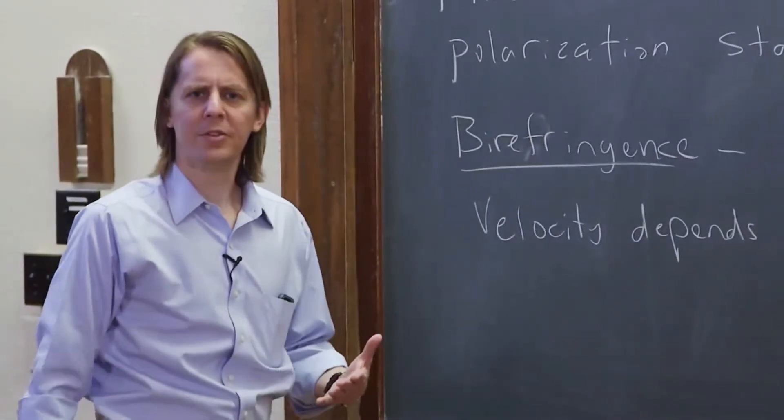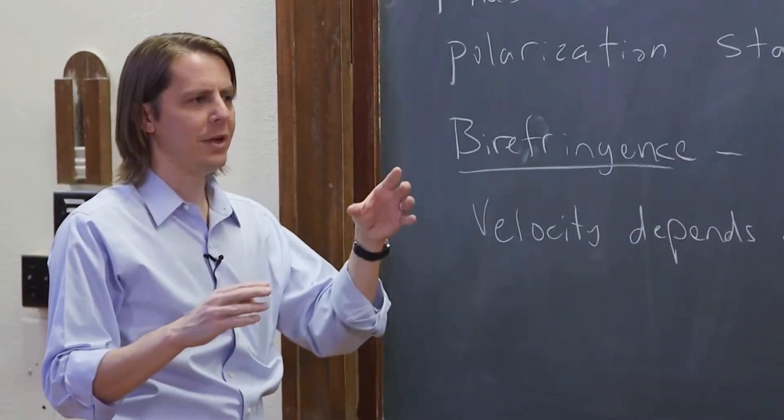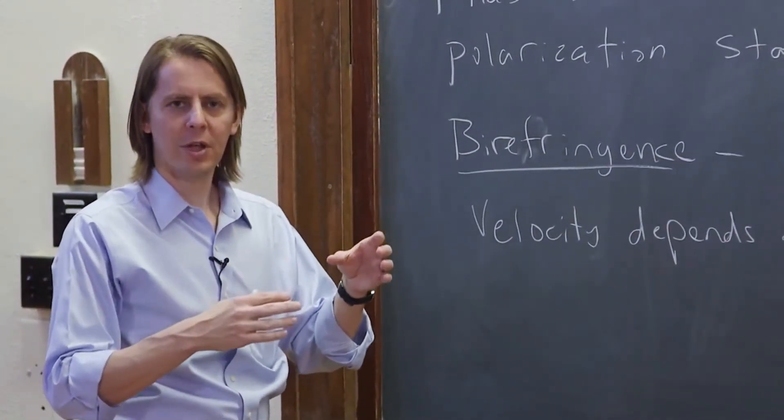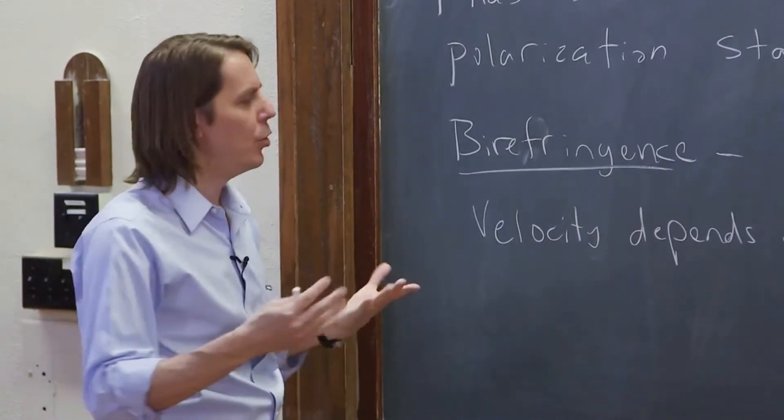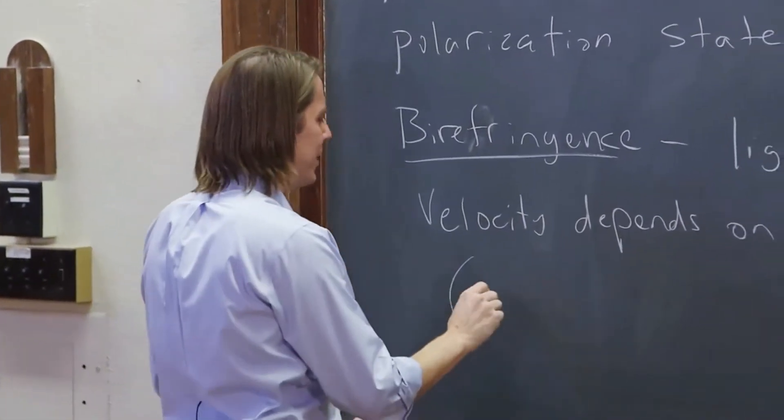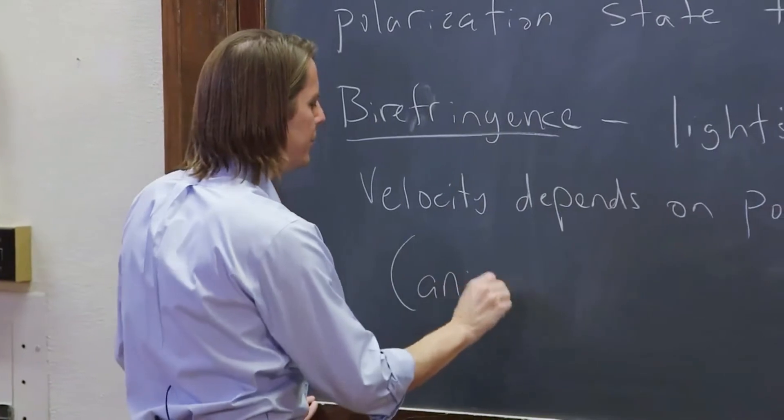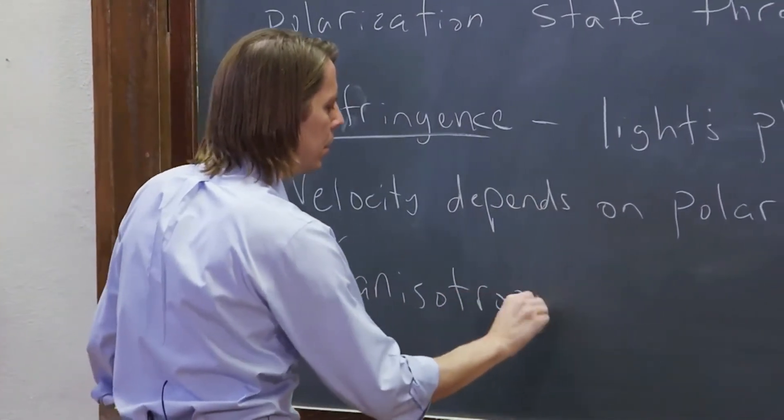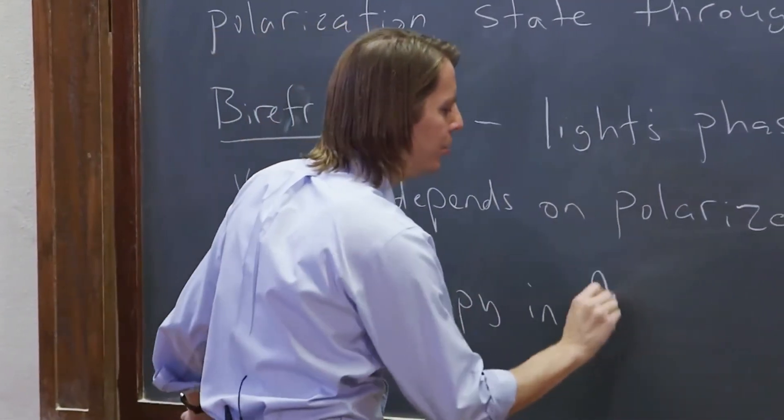The phase velocity - remember when you go into a material, you take the speed of light and divide it by the real part of the index of refraction. So if you want to think in terms of anisotropy, it's anisotropy in the real part, in n_r.